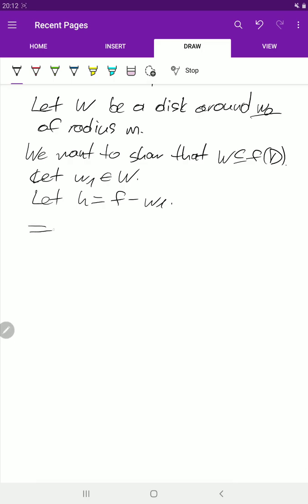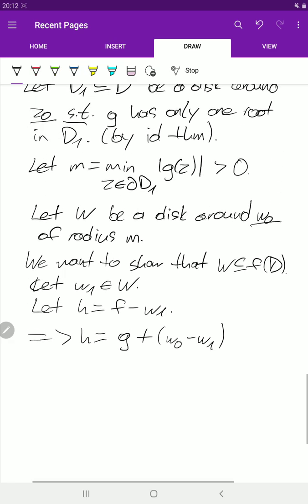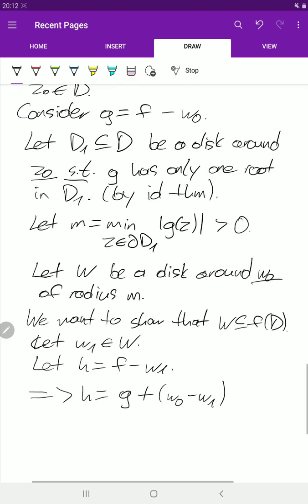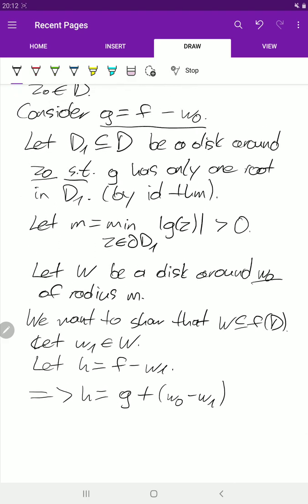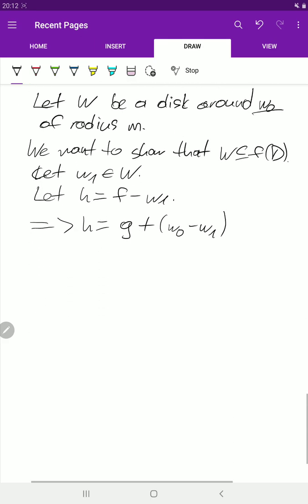I already mentioned that we want to use Rouché's theorem, so let's write H as G plus w0 minus w1. If we add w0 and subtract w1, we have exactly H.